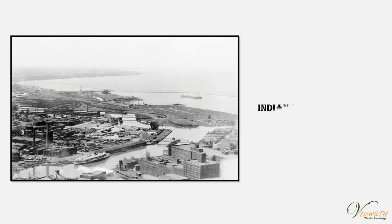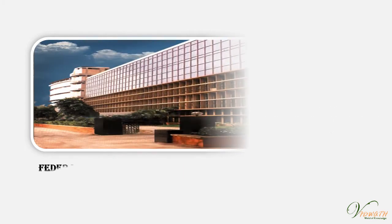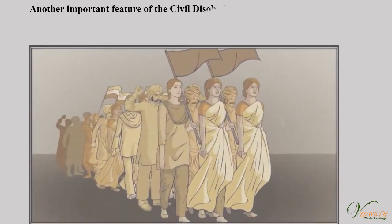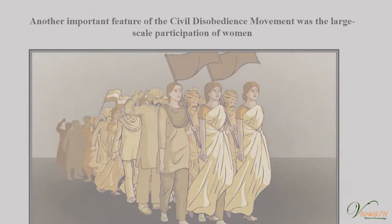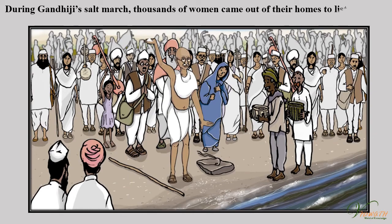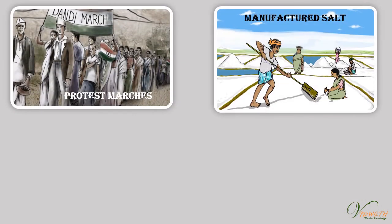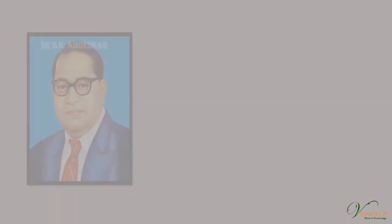Businessmen formed the Indian Industrial and Commercial Congress in 1920 and the Federation of the Indian Chamber of Commerce and Industries (FICCI) in 1927 to organise their interests. Another important feature of the civil disobedience movement was the large-scale participation of women. During Gandhiji's salt march, thousands of women came out of their homes to listen to him. They participated in protest marches, manufactured salt, and picketed foreign clothes and liquor shops.